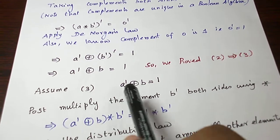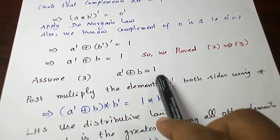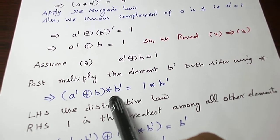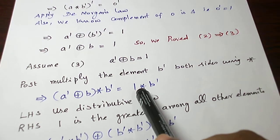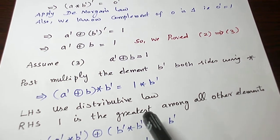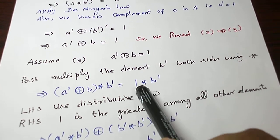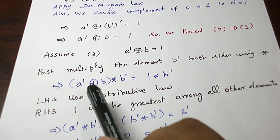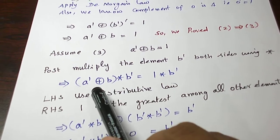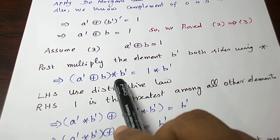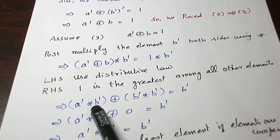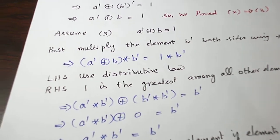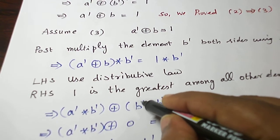Now assume statement 3: A dash plus B equal to 1. On both sides, let us post-multiply the element B dash using the star (meet) operation. Since 1 is the least upper bound, 1 star B dash gives B dash. For the left-hand side, applying the distributive law — plus is the operation inside the bracket, star is outside — we get A dash star B dash plus B star B dash.